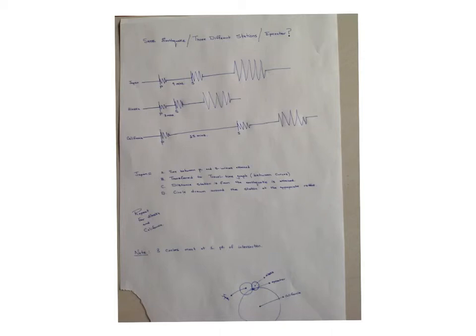So you draw a circle around your station with that particular radius, giving you one circle of one size. You take the exact same approach for Alaska. Now, in this particular case, you're going to have a circle for Japan and a circle for Alaska. Two circles will intersect at two points. We only need one point, so we need to bring in our third station, which is why we bring in California.